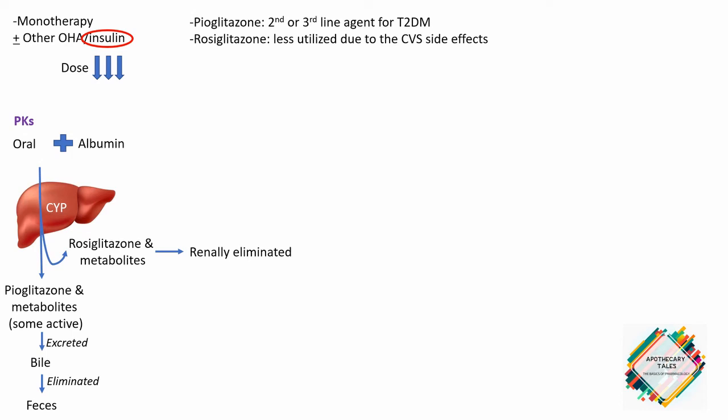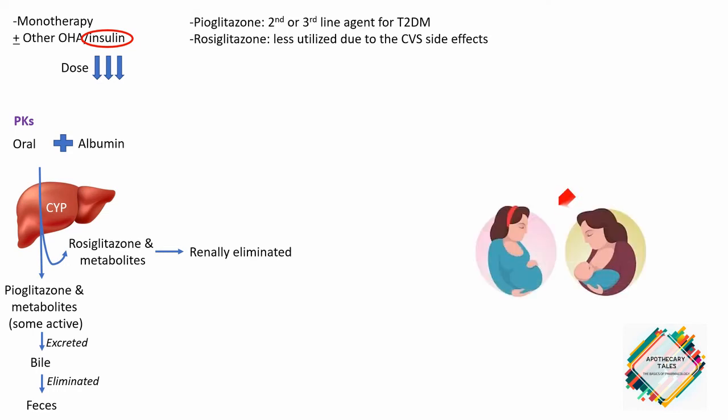Metabolites of rosiglitazone are primarily excreted in the urine, and there is no requirement for dosage adjustment in renal-impaired patients. These agents should be totally avoided in nursing mothers.